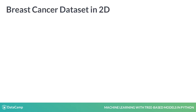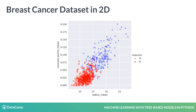To understand trees more concretely, we'll try to predict whether a tumor is malignant or benign in the Wisconsin Breast Cancer dataset using only two features. The figure here shows a scatter plot of two cancerous cell features with malignant tumors in blue and benign tumors in red.